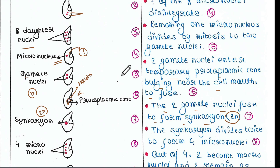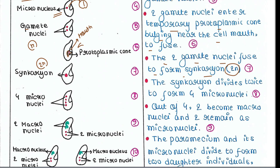The syncarion is just like the zygote — it is diploid. The syncarion divides twice: after the first division two micronuclei form, and after the second division four micronuclei form. Out of these four micronuclei, two become macronuclei and the other two remain as micronuclei. So now we have two micronuclei and two macronuclei.